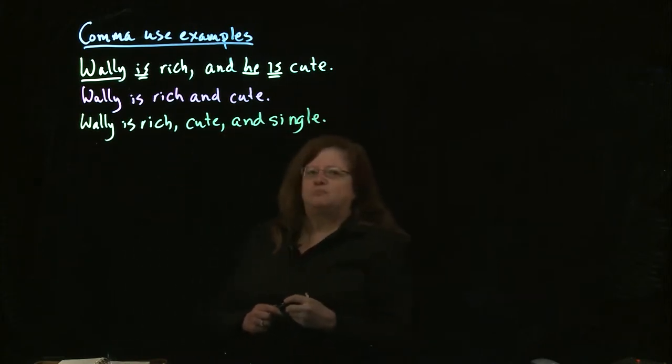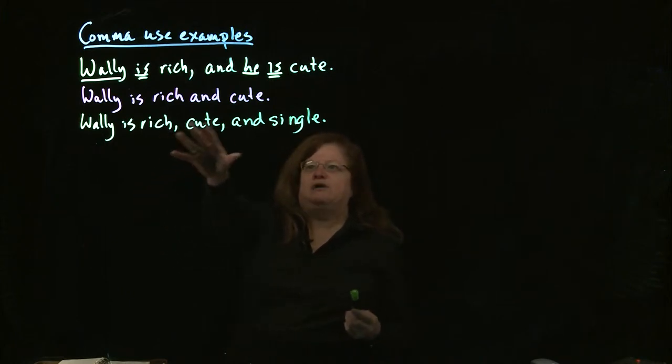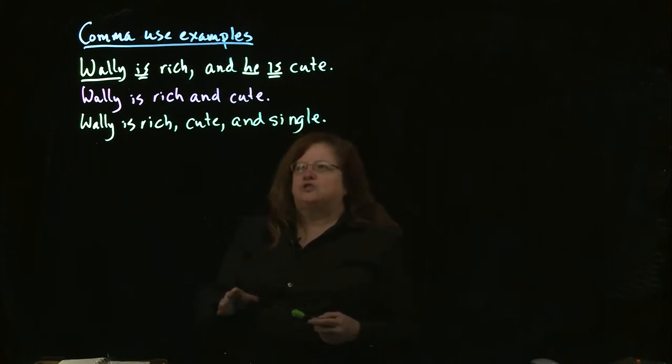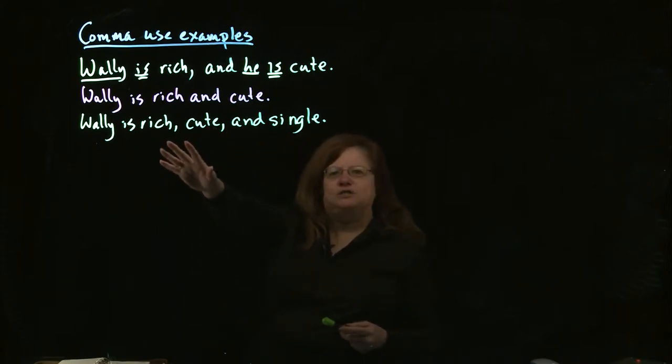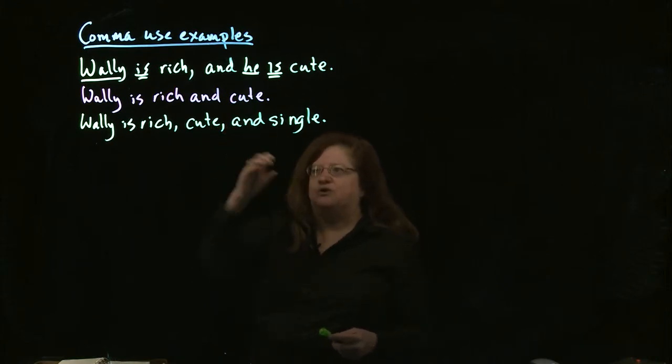And at this point, somebody usually asks me for his phone number. So now if we look at this, we have a series of three or more items here. These are adjectives describing Wally. And so one way to think about these commas in this list is see if those commas can be replaced by the word and. I can say Wally is rich and cute and single. So you can think of the comma as replacing those ands.